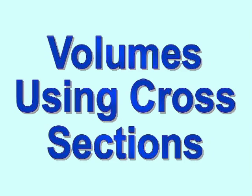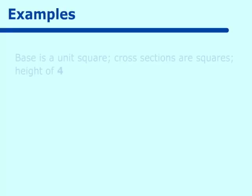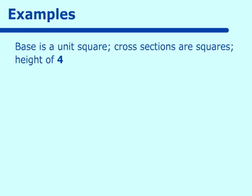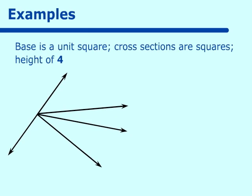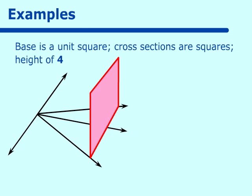Most of these examples have been taken from the problems on the website. Our first example is one from the website. It says the base is a unit square and the cross sections are squares with a height of 4. What you had seen was a pyramid, but I am going to resketch that. The reason I'm doing this is because I am taking my cross sections off of the particular axis and it will be perpendicular to the x-axis.